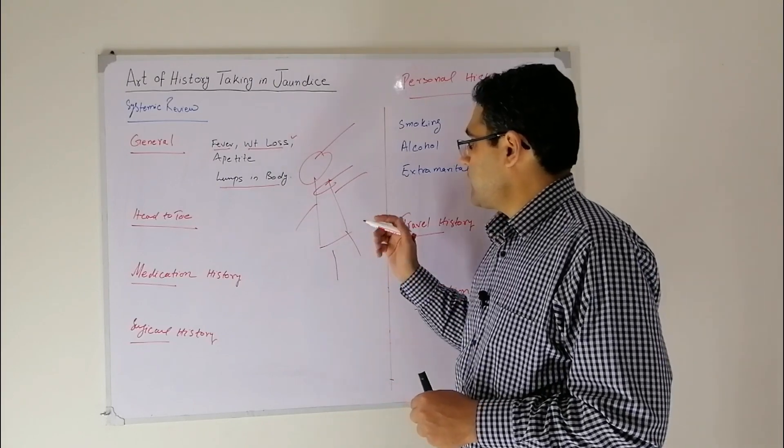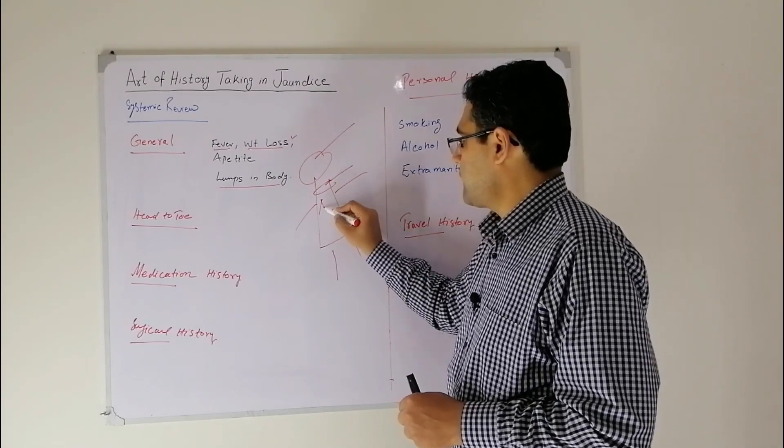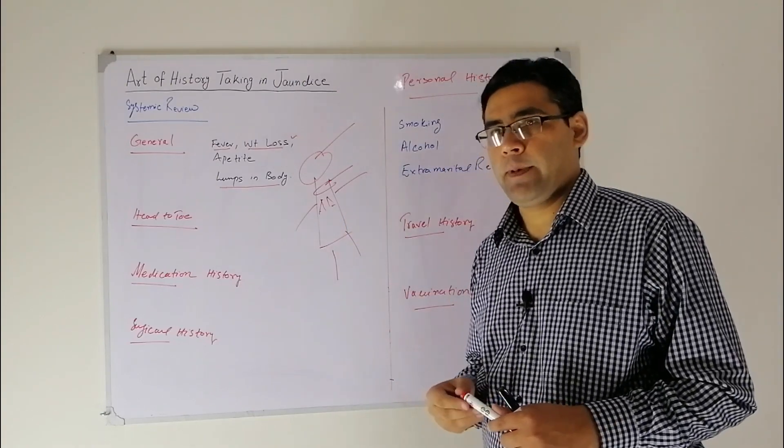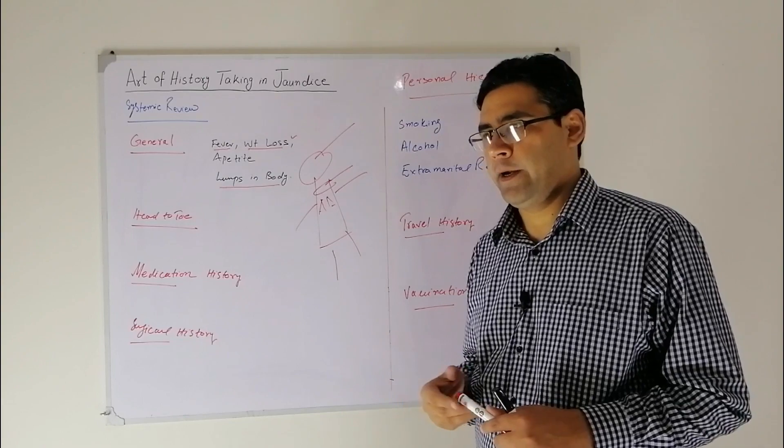Then comes the respiratory system. Ask about any difficulty in breathing, chest pain, chest tightness, and palpitations to rule out tricuspid regurgitation.